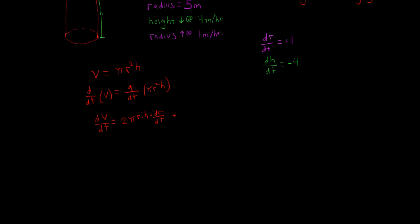Then we add the derivative of the height term. In this case, since our variable is the height, the radius is just a constant — right now it's at 5. We take the degree of our variable: h is to the power of 1, so we multiply by the constant pi r squared. Taking 1 away from the degree gives h to the power of 0, which is 1. But we also have to multiply by the derivative of the height with respect to time.